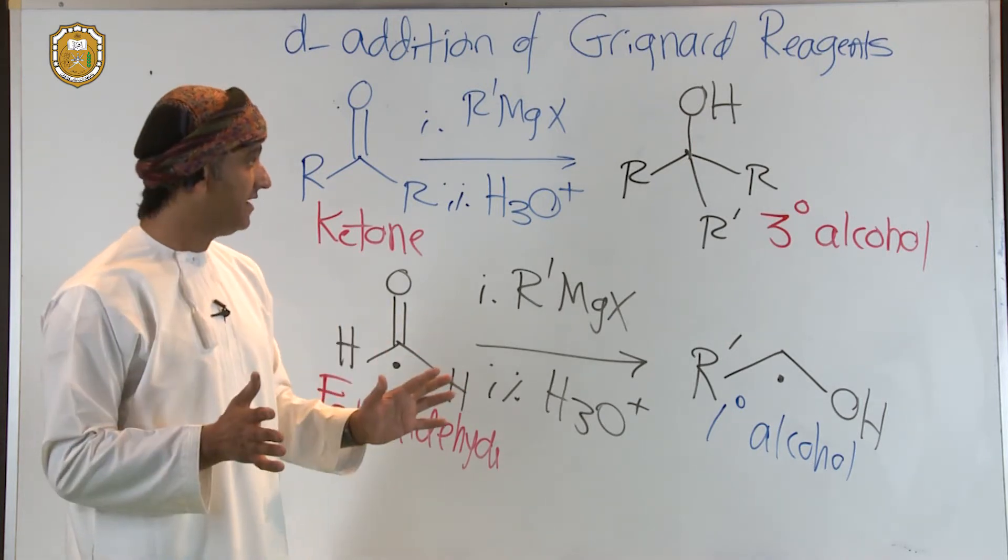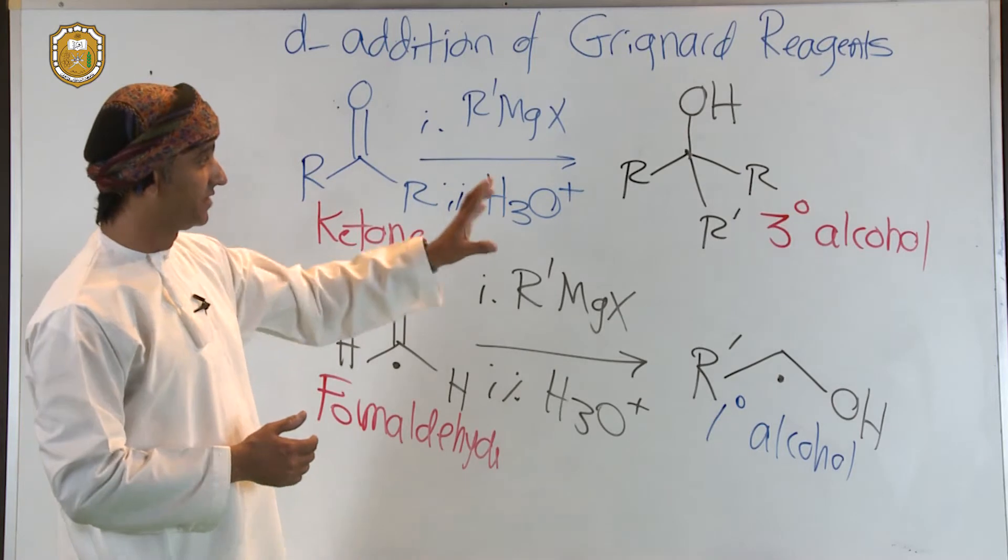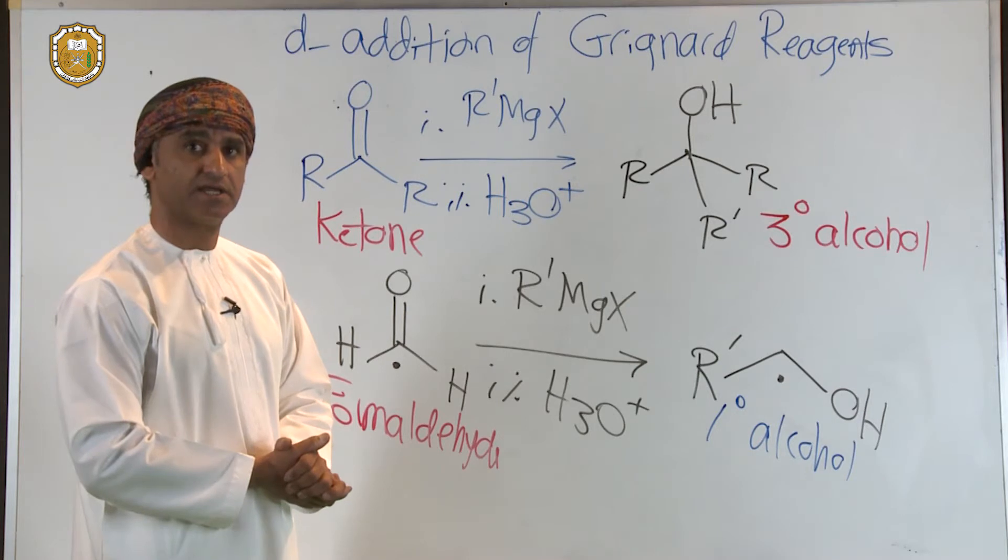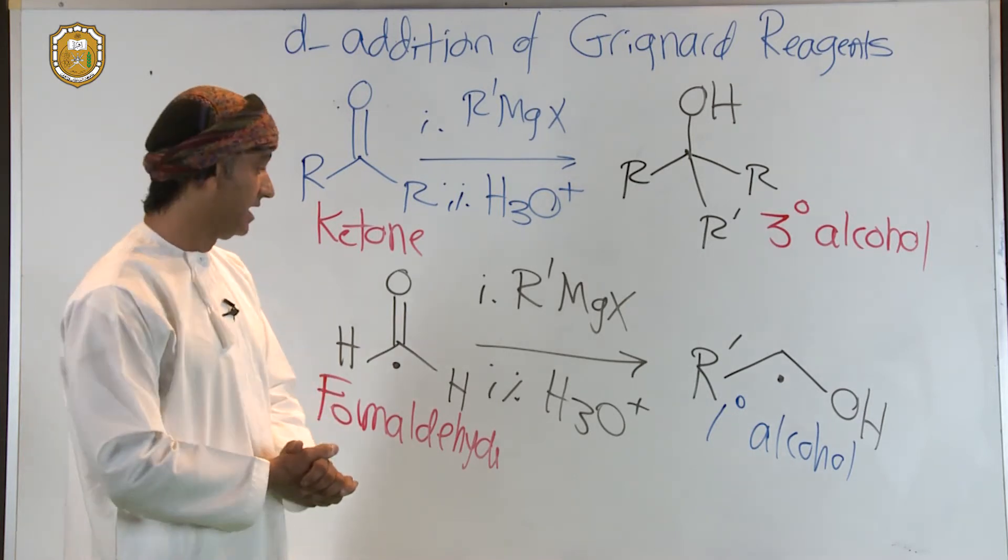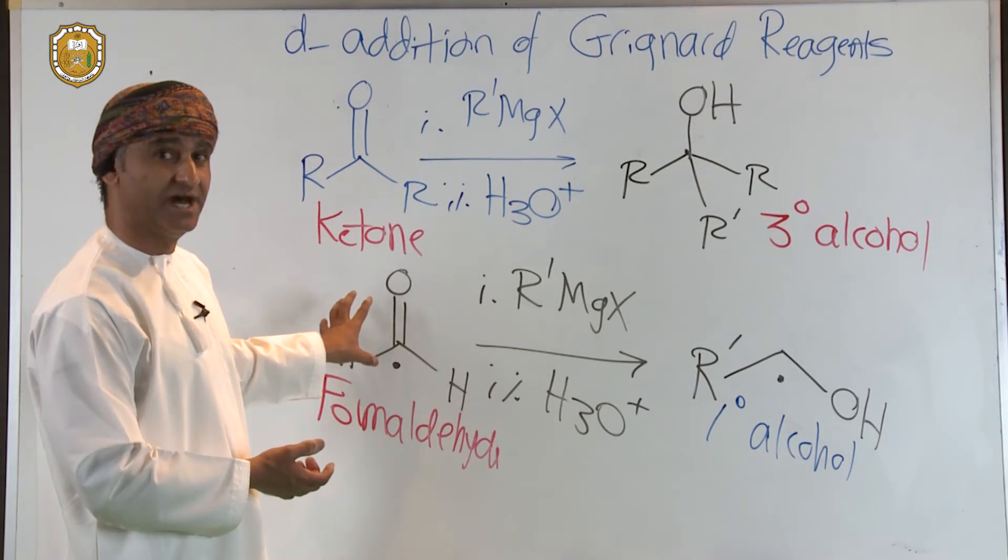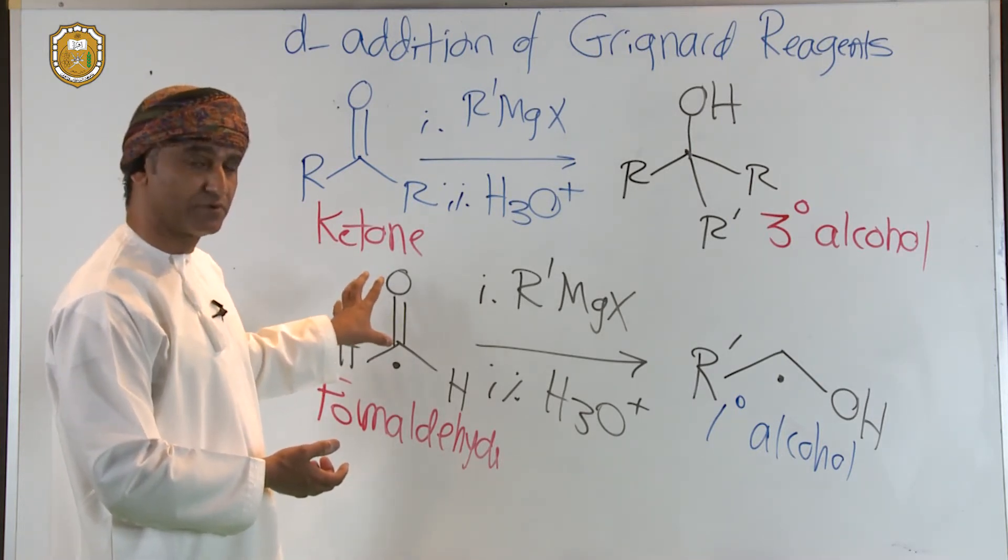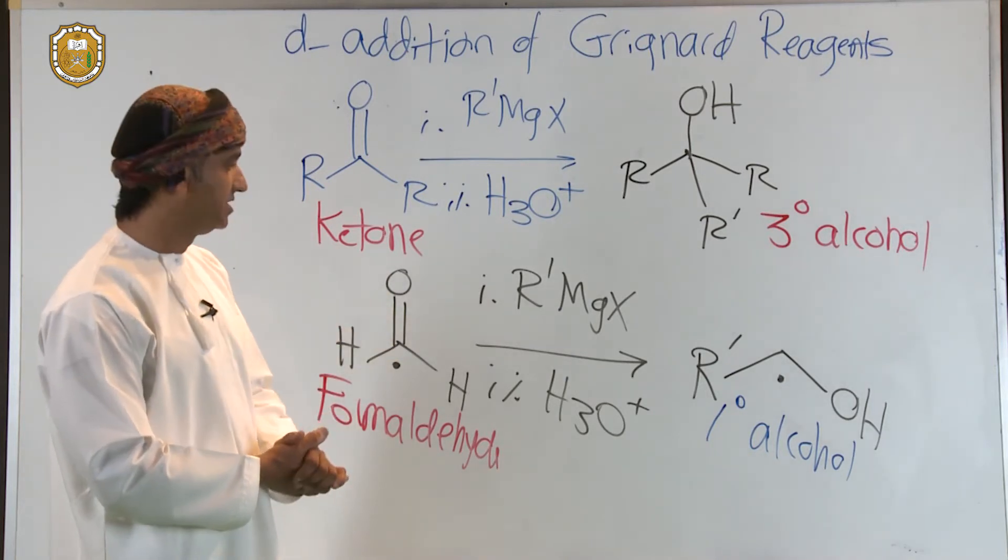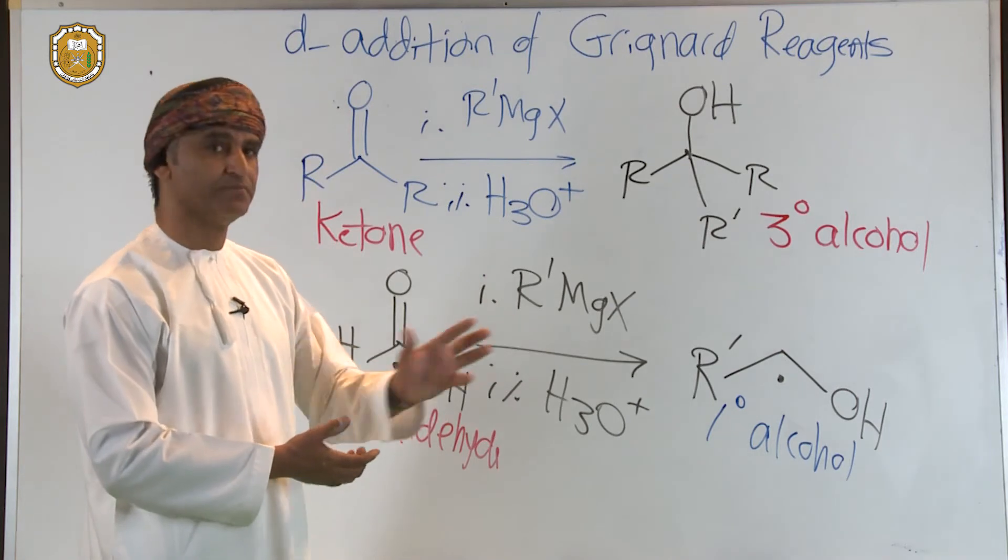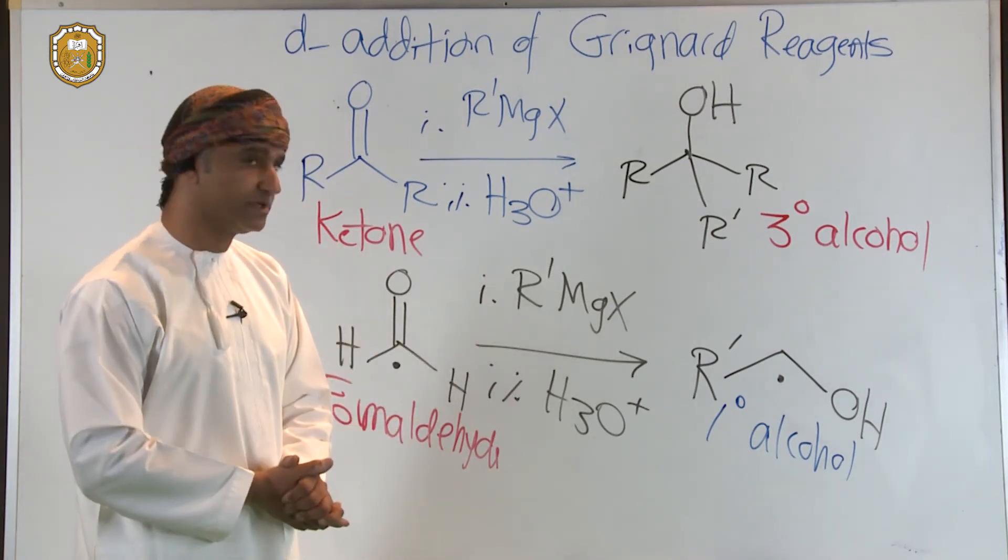To conclude, Grignards attack ketones to give the corresponding tertiary alcohol with more carbons, and the additional number of carbons comes from the Grignard reagents. Grignards also attack formaldehyde or add to formaldehyde in nucleophilic addition reaction to give the corresponding primary alcohol. The additional increase in the number of carbons comes from the corresponding Grignard.